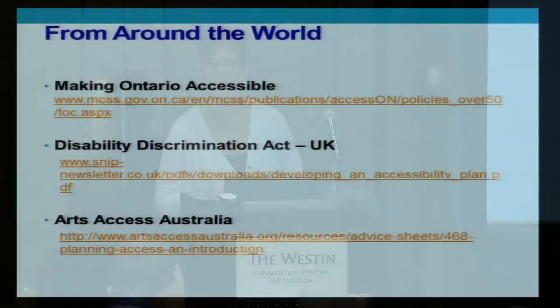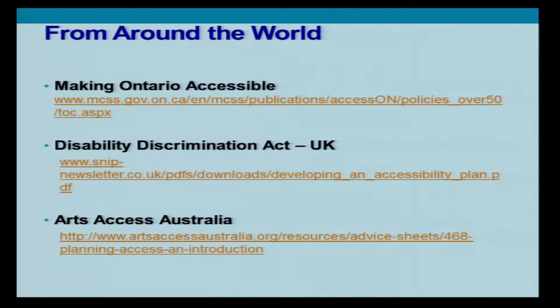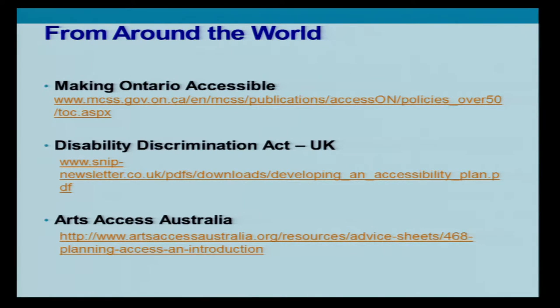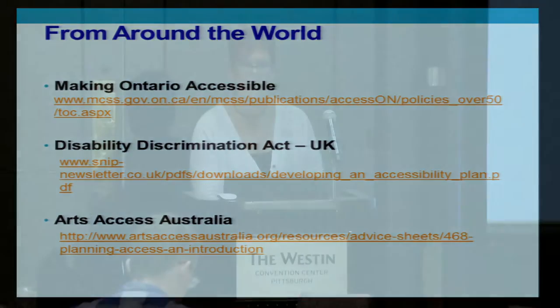There are also international resources to consider. Making Ontario Accessible in Canada has a very good accessibility guide around policies and procedures. The UK Discrimination Act has a good accessibility planning process. And Access Arts Australia is known for being more progressive in this area and has good advice and tip sheets that you might want to consider adapting for your use.